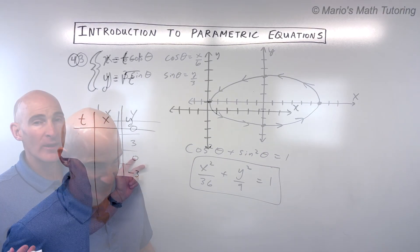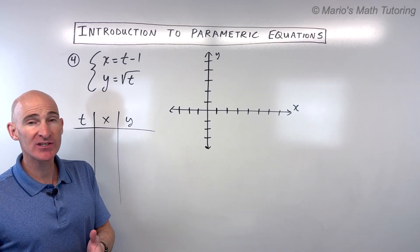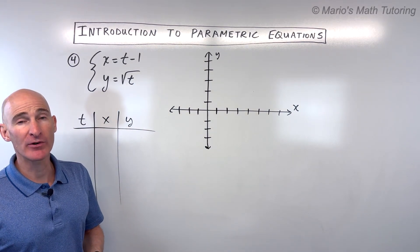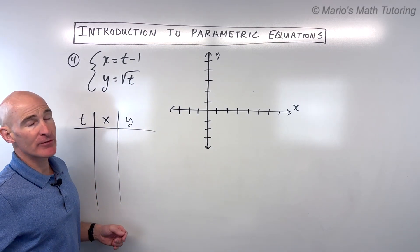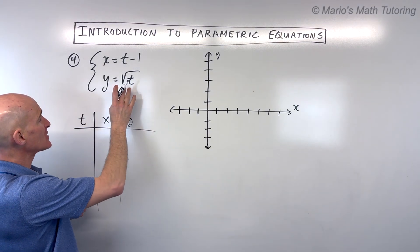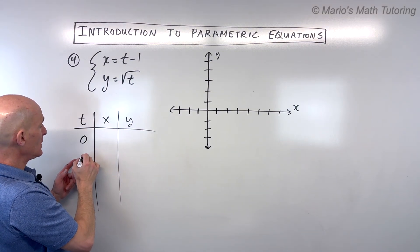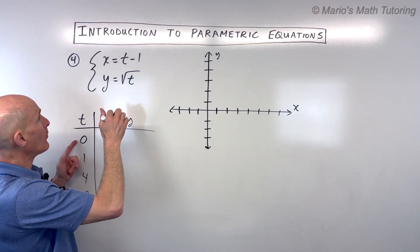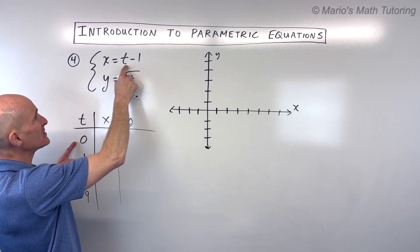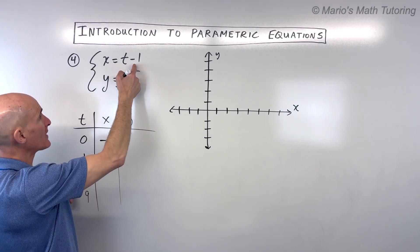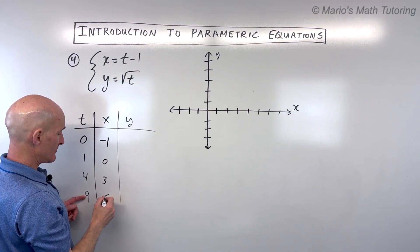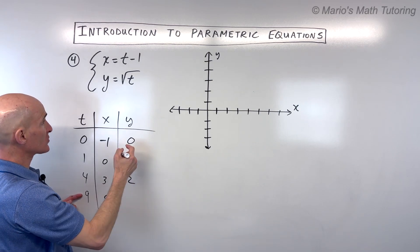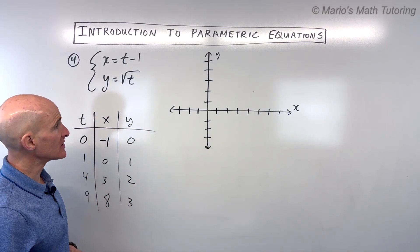Example four is interesting because we have to pay attention to restrictions on the parameter t. We have the square root, and we can't take the square root of negative numbers, so we're restricted to t values of zero or greater. I'll pick zero, one, four, and nine — values that are easy to take the square root of. Plugging in: t minus one gives us negative one, zero, three, and eight for x. The square root of zero, one, four, and nine gives us zero, one, two, and three for y.